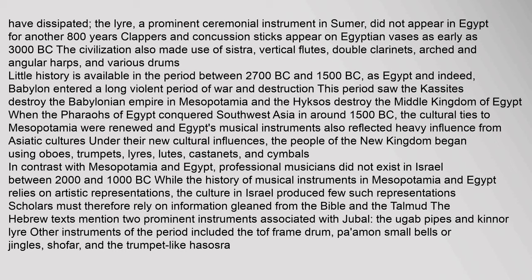Little history is available in the period between 2700 BC and 1500 BC, as Egypt and Babylon entered a long violent period of war and destruction. This period saw the Kassites destroy the Babylonian Empire in Mesopotamia and the Hyksos destroy the Middle Kingdom of Egypt. When the pharaohs of Egypt conquered Southwest Asia in around 1500 BC, the cultural ties to Mesopotamia were renewed. Under their new cultural influences, the people of the new kingdom began using oboes, trumpets, lyres, lutes, castanets, and cymbals.